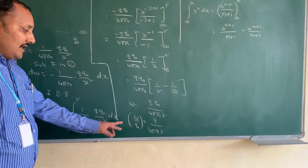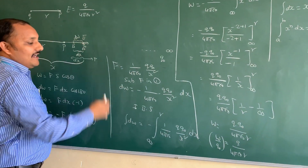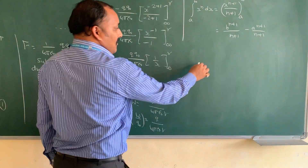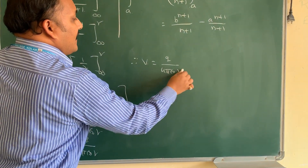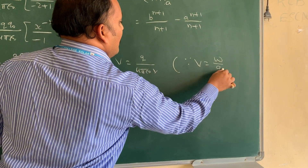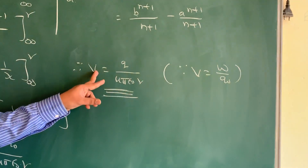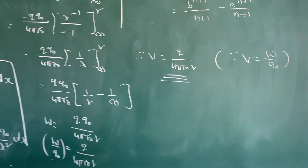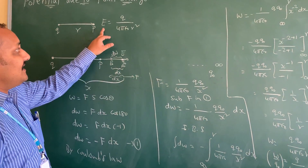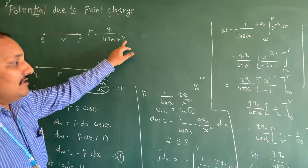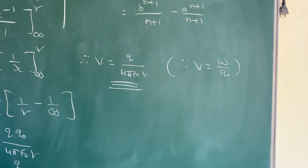Now divide both sides by q naught: W by q naught equals Q by 4 pi epsilon naught r. W by q naught is the work done per unit positive test charge to move it from infinite distance to point P, against the direction of the electric field. This is nothing but electric potential. Therefore V equals Q by 4 pi epsilon naught r. This is the final equation for potential due to a point charge at distance r. Compare with electric field: E equals Q by 4 pi epsilon naught r square, which has r square, while potential V has only r.